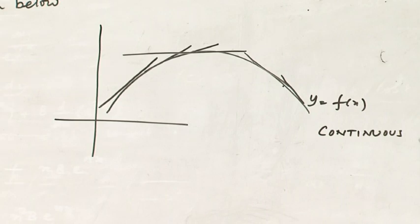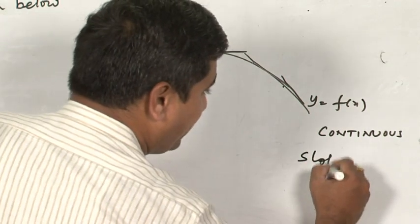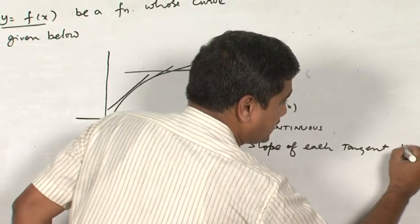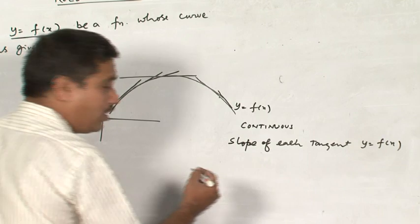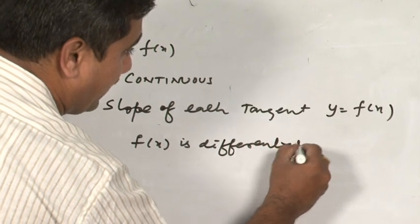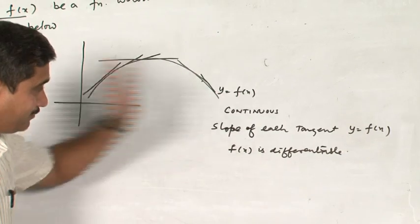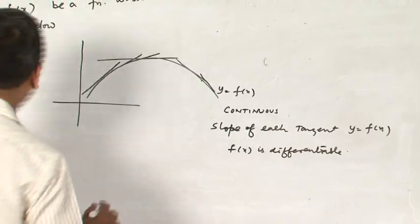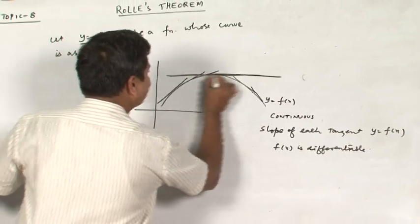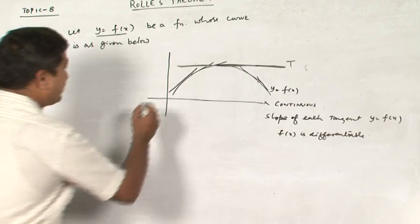When I construct tangents to all these curves, the slope of each tangent drawn to the curve y = f(x) speaks to what f(x) being differentiable means. Interestingly, of all the tangents drawn, there is exactly one tangent that is drawn absolutely parallel to the x-axis. This is the tangent relevant to discussing Rolle's theorem.